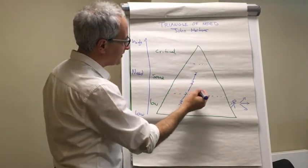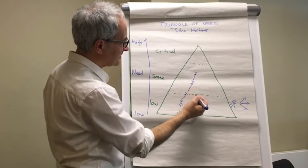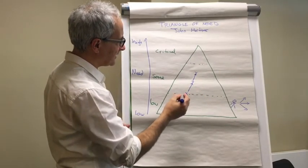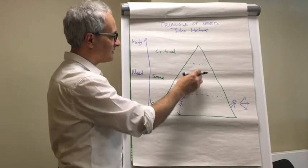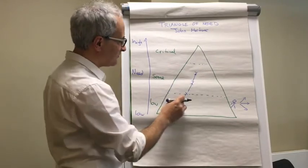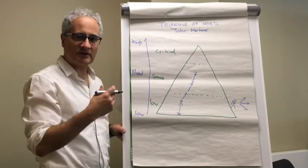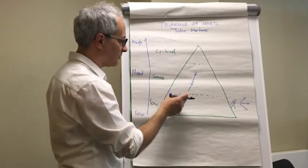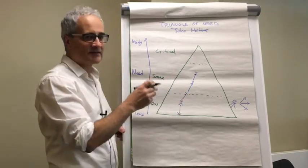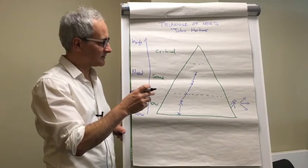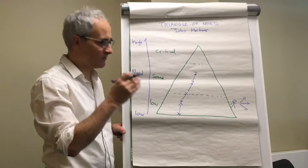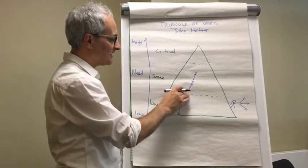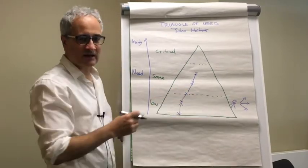And what you tend to find is that in organizations, typically when you examine the journey of someone that's gone up this triangle of need, you find that at many of these points, although organizations have attempted to help and support them, the reality is they haven't actually had that level of support that is helpful to them to actually stay or reduce their level of need.